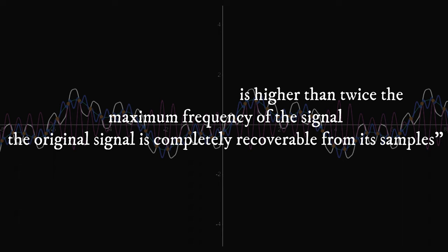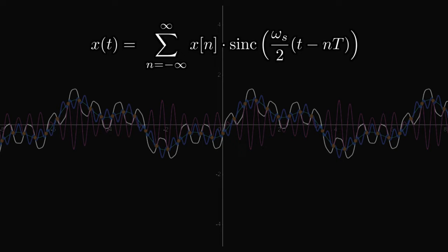The reconstructed signal is then given by this formula, where x of n is the sampled signal, t is the sampling period, and the sinc function is defined by sin over x.